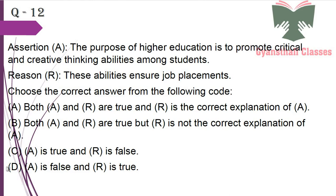Assertion: The purpose of higher education is to promote critical and creative thinking abilities among students. Reason: These abilities ensure job placements. Both A and R are true, but R is not the correct explanation of A. It is not the correct reason.